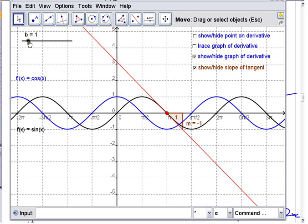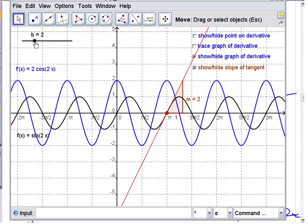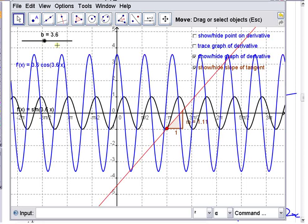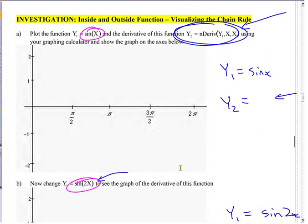But as you increase this, people always have trouble and think, why does the graph of the derivative get taller? Like, they understand why it gets compressed, right? So that, like, they're okay with why...